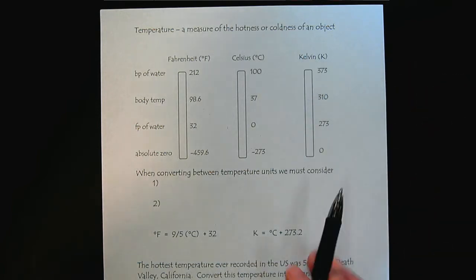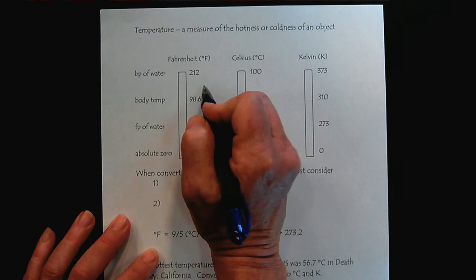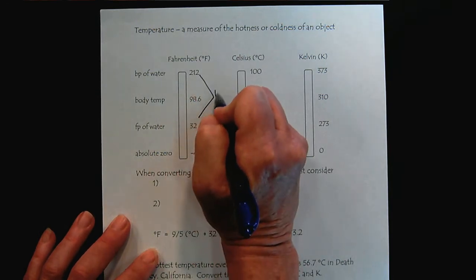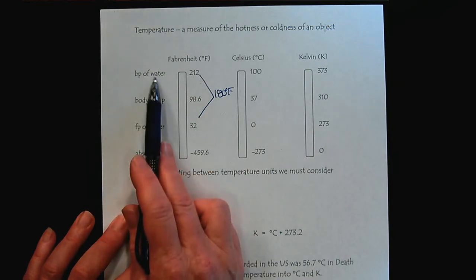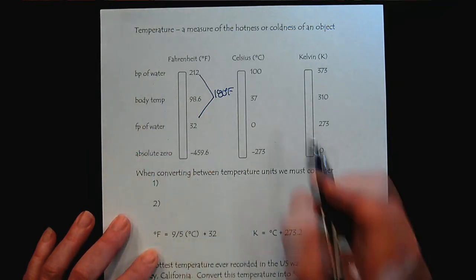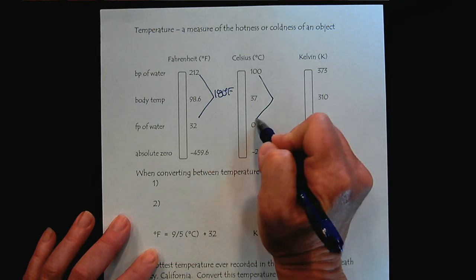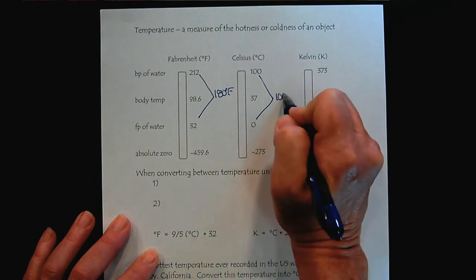If we compare these two unit systems, we can see that there's 180 degrees Fahrenheit between the freezing point and boiling point of water, compared to only 100 degrees in Celsius.